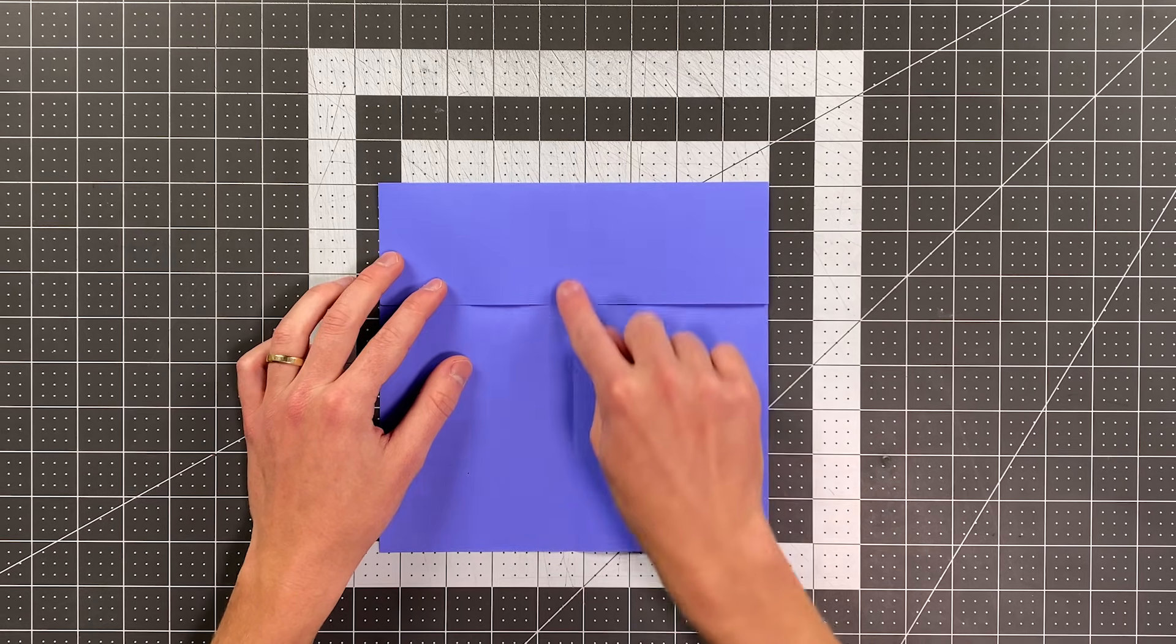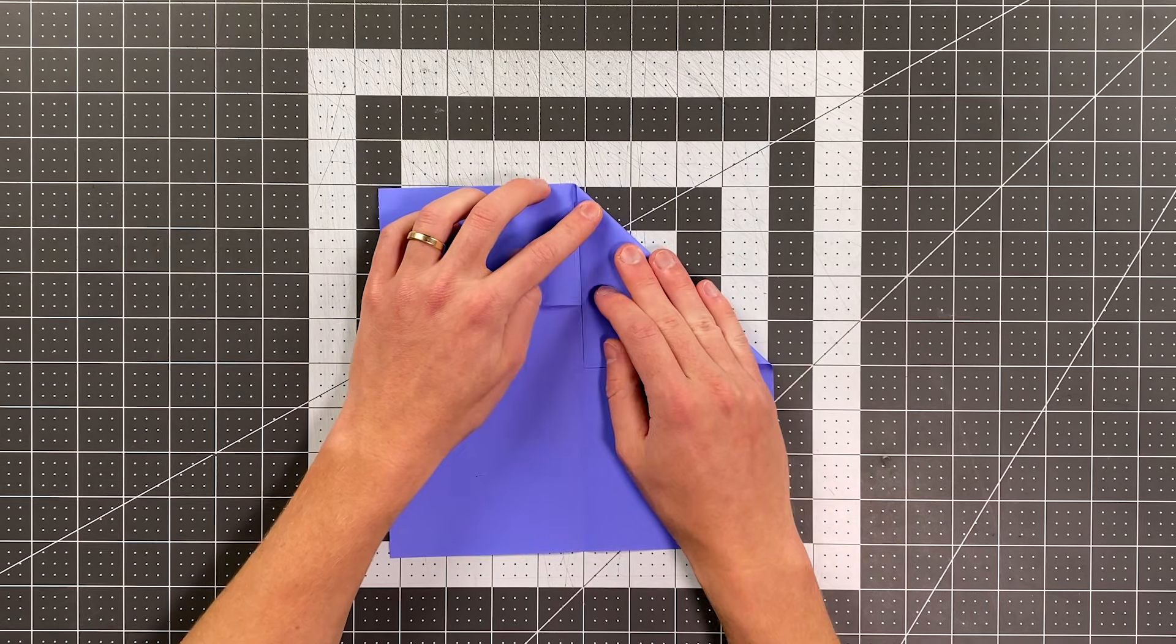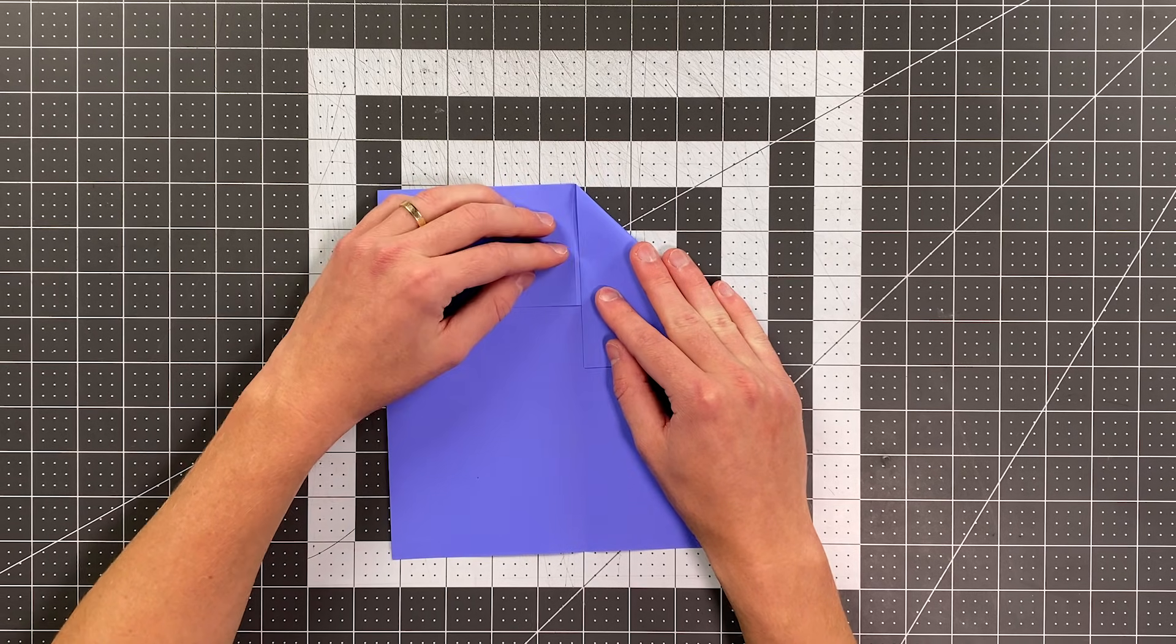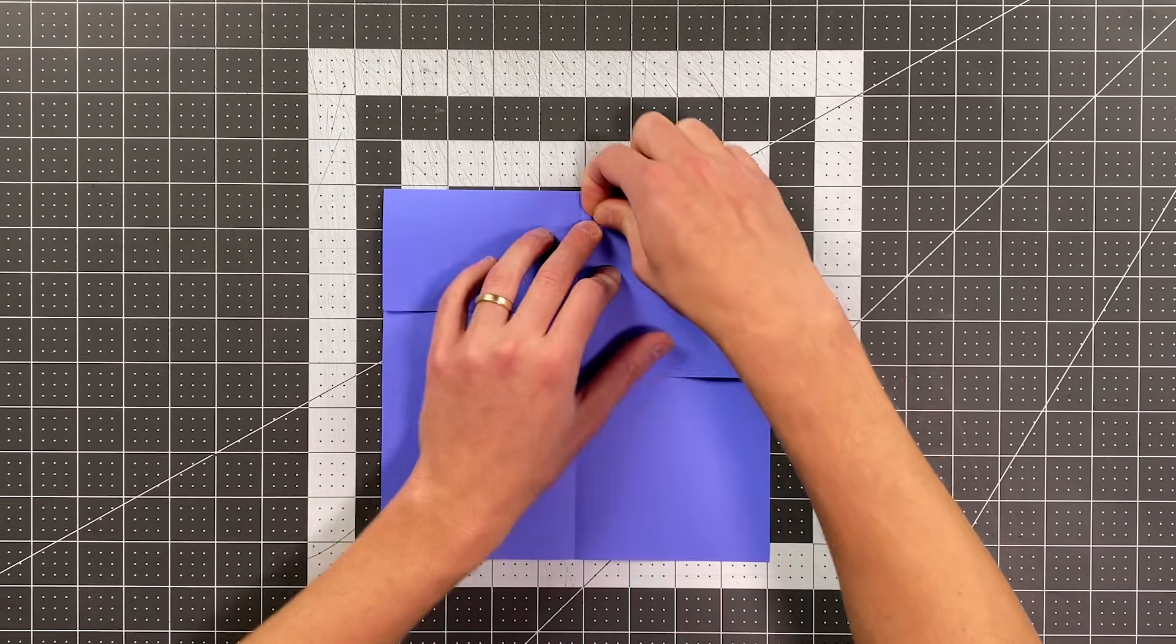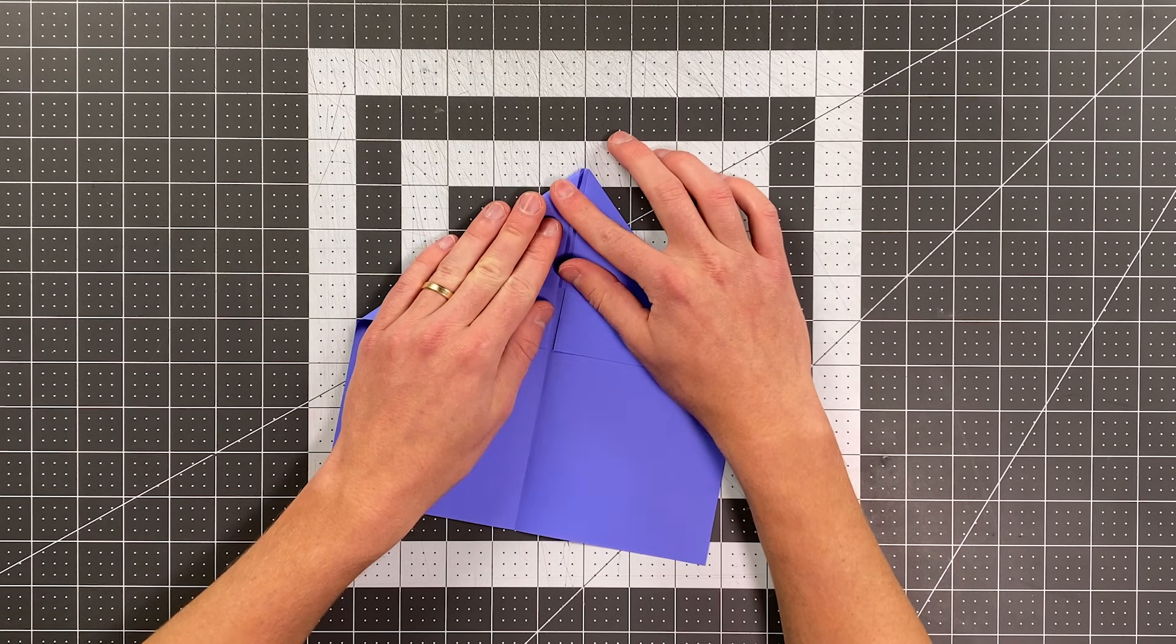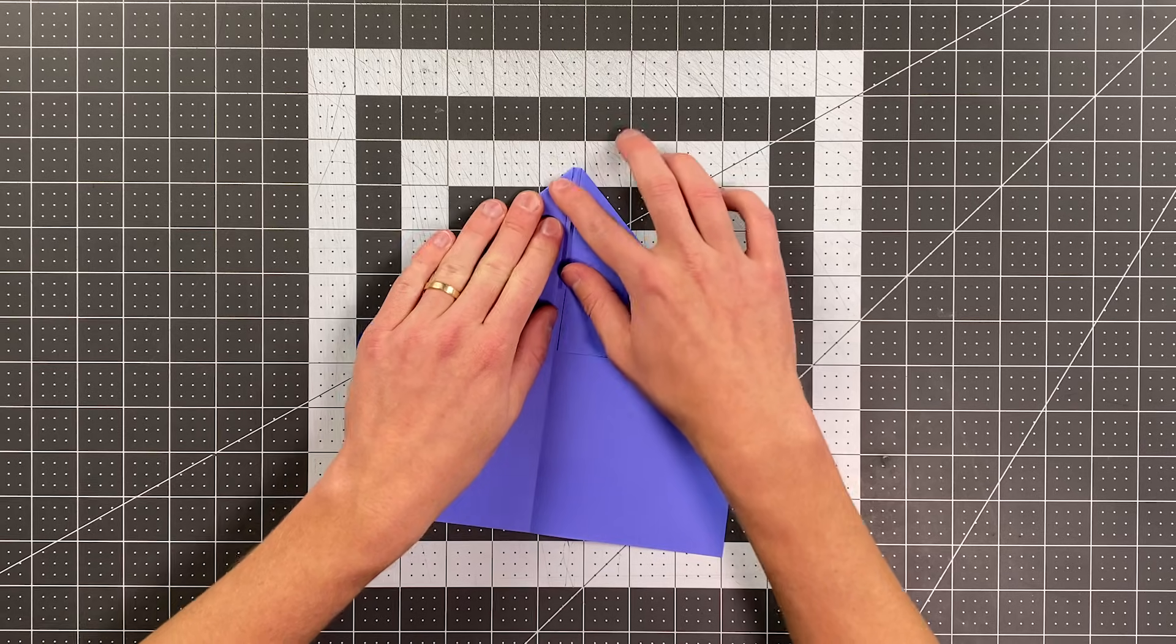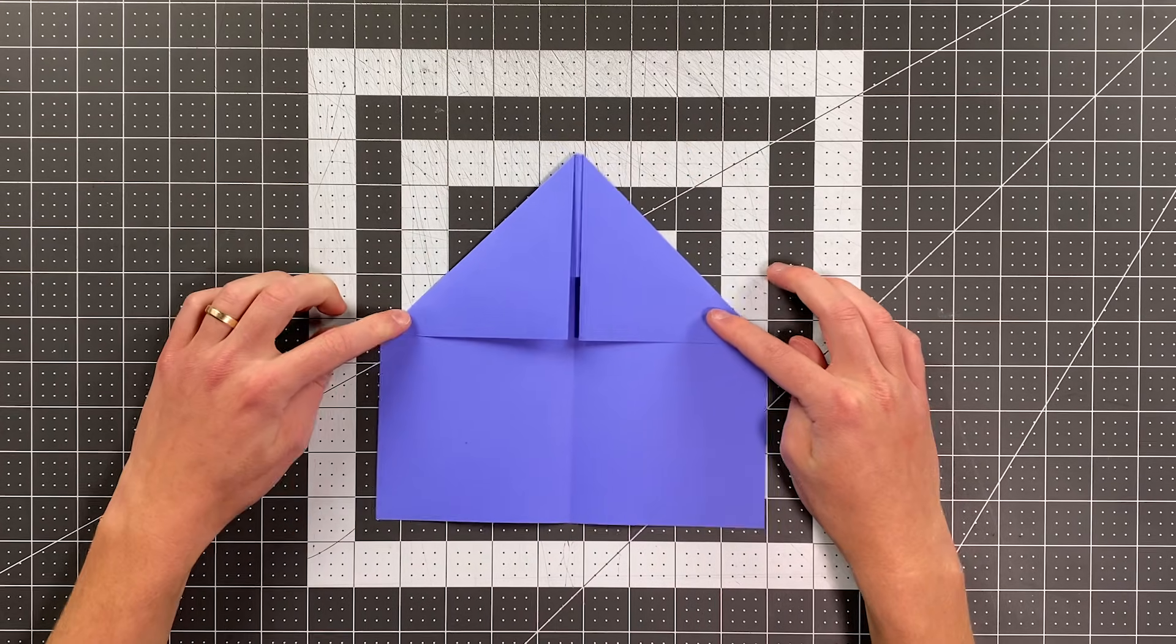We're now going to fold this edge here into the center, but leave just a couple millimeters as a gap. So you can see about how I'm doing mine here. Make yours something like this where your edge is parallel to the center crease but not touching it. And do the same thing on the other side. Your plane should look like this.